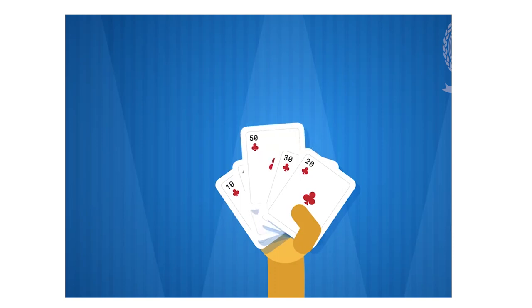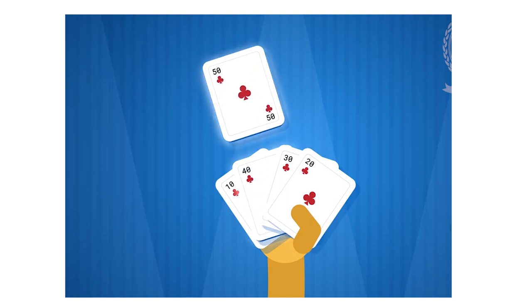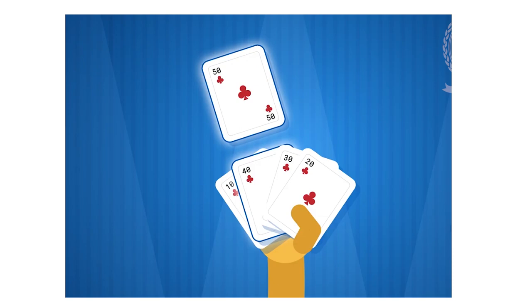Then we compare 50 with 40, so no swapping. Then we swap 30 with first 50 then 40 and swap. So, let's take an example of array with elements 5, 1, 10, minus 2, 18, 2, 10, 15. In step 1, we come up with 5 and compare it with 1 and swap.